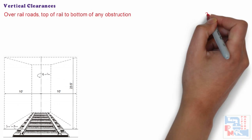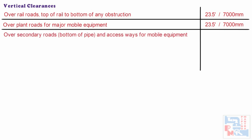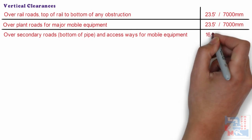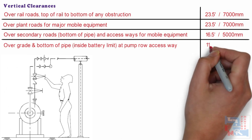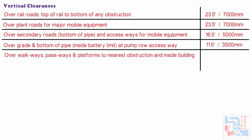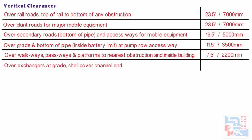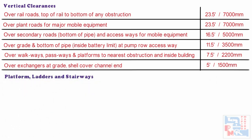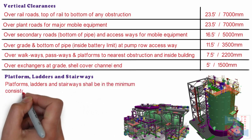Vertical or headroom clearances: over railroads, top of rail to bottom of any obstruction — 23.5 feet or 7 meters. Over plant roads for major mobile equipment — 23.5 feet or 7 meters. Over secondary roads, bottom of pipe and access ways for mobile equipment — 16.5 feet or 5 meters. Over grade, bottom of pipe or inside battery limit at pump row access way — 11.5 feet or 3.5 meters. Over walkways, passageways, and platforms to nearest obstruction and inside buildings — 7.5 feet or 2.2 meters. Over exchangers at grade, shell cover channel end — 5 feet or 1500 mm. Platforms, ladders, and stairways shall be the minimum consistent with access and safety requirements. Access to platforms shall be by permanent sidestep ladder.